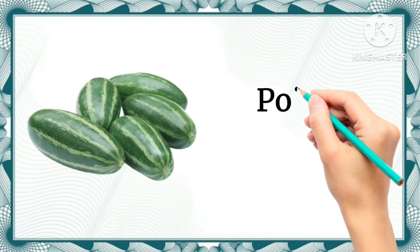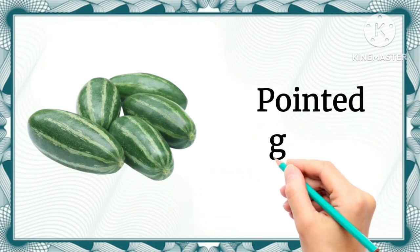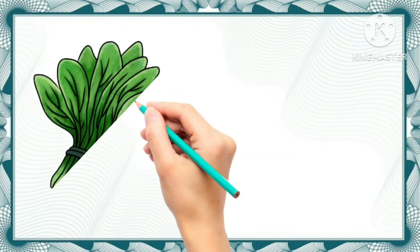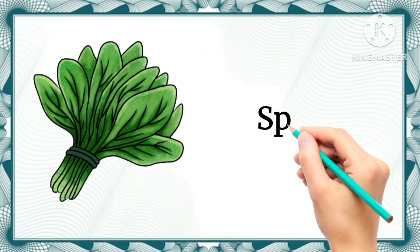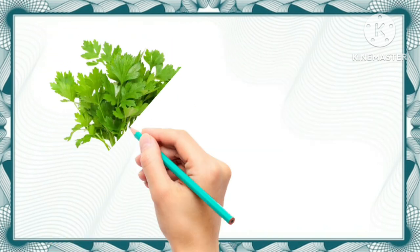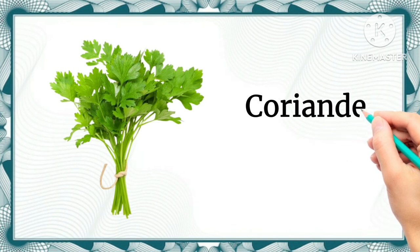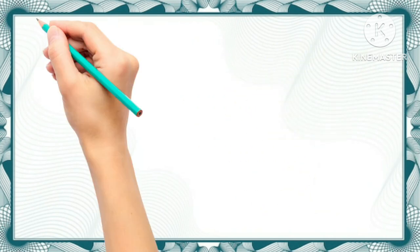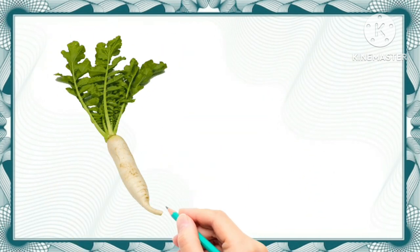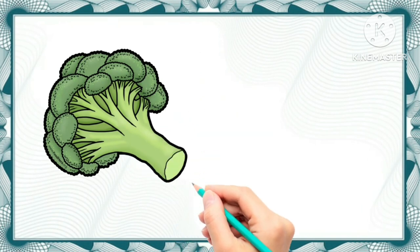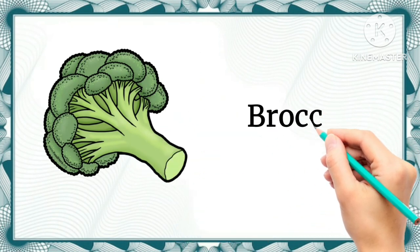Pointed gourd - this vegetable is pointed gourd. Spinach - this is spinach. Coriander leaves - these are coriander leaves.